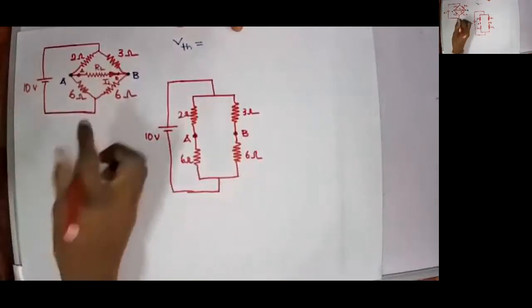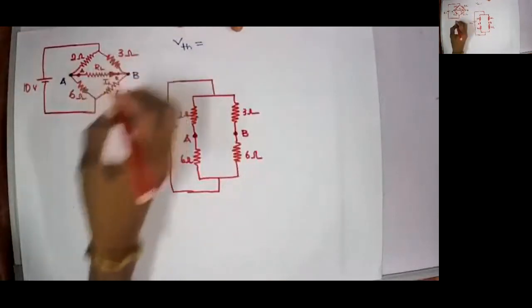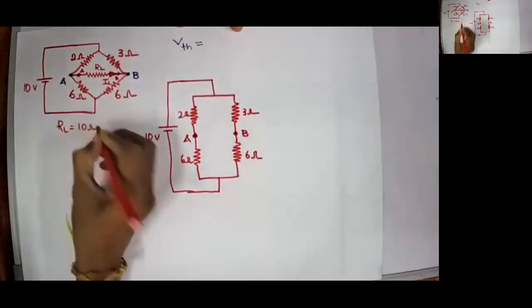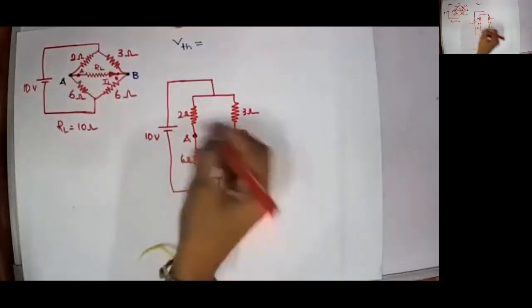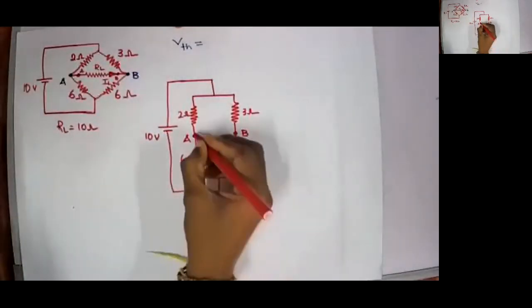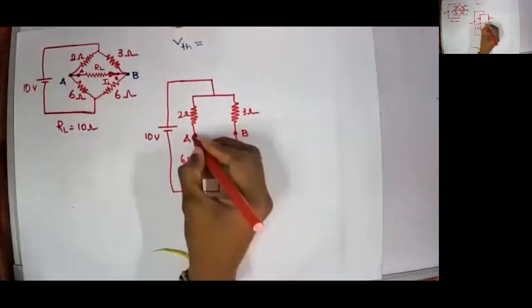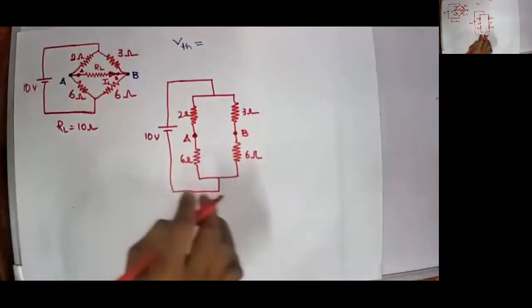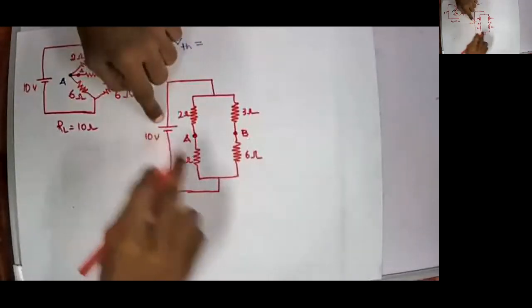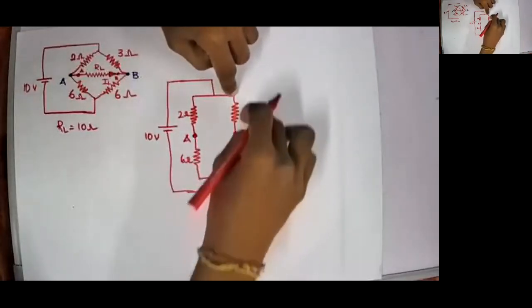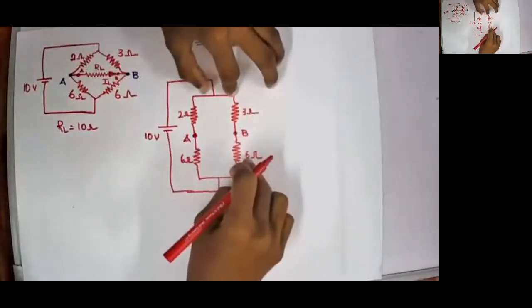So Vth: first we need to open circuit the load resistance RL. Let RL be 10 ohms. So just open circuit RL. So the circuit will be something like this. And we need to calculate the voltage across points A and B. So now we have 10 voltage. We have a potential divider here with 3 and 6.